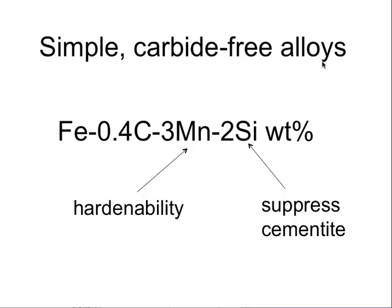Let us design a very simple carbide-free alloy. We have added 2 weight percent of silicon to this steel so that when we form bainite we will not actually get any cementite, and instead the carbon that is partitioned remains in the austenite and therefore stabilizes the austenite to martensitic transformation on cooling to room temperature. We should end up with a nice mixture of bainitic ferrite and austenite. We add a certain amount of manganese because we want to avoid the formation of ferrite or pearlite. And the carbon is there for the strength.